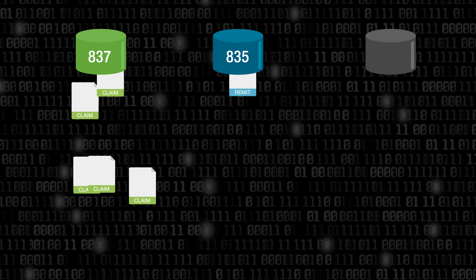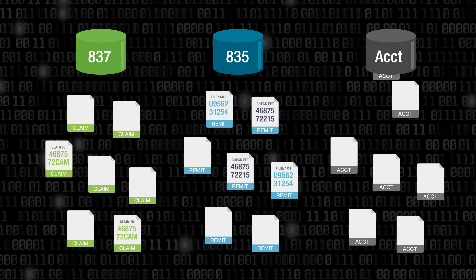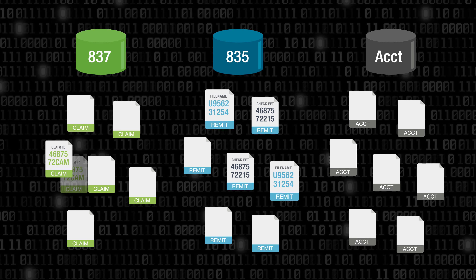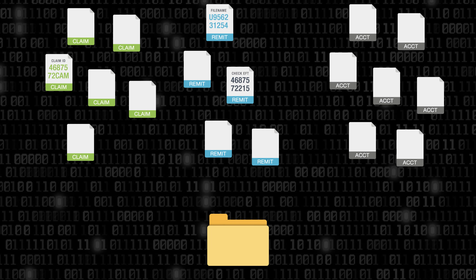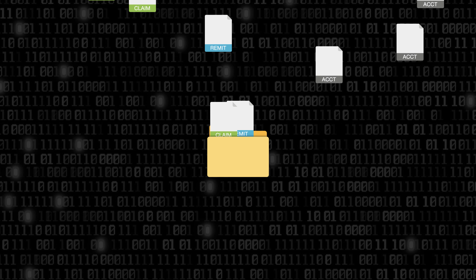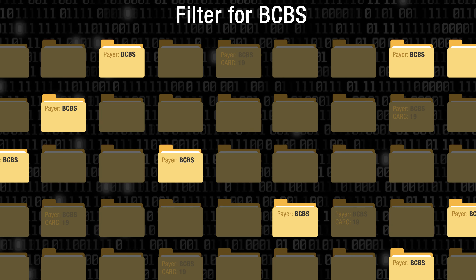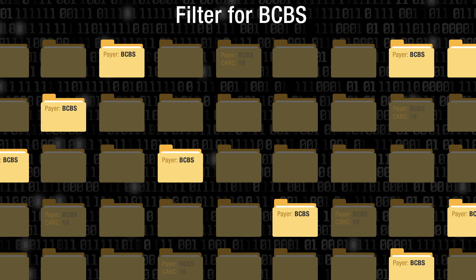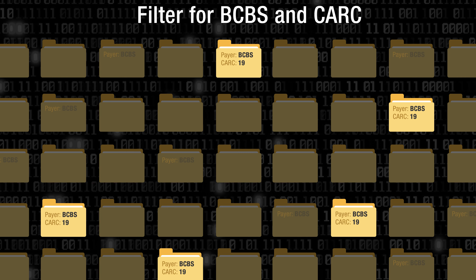Physiquate's Denials Management solution starts with the data. Once we pull in your 837-835 data along with a small extract from your accounts file, the first step is to deduplicate your inventory. We tie each remit back to its associated claim and account to create an encounter for each claim, and provide you with reporting filters so that you can see the true current inventory of denials that you're dealing with.